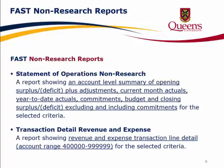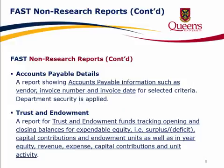Transaction Detail Revenue and Expense Report: a report showing revenue and expense transaction line detail for the account range 4000000 through 9999999 for the selected criteria. The Accounts Payable Details Report: a report showing accounts payable information such as vendor, invoice number, and invoice date for selected criteria.